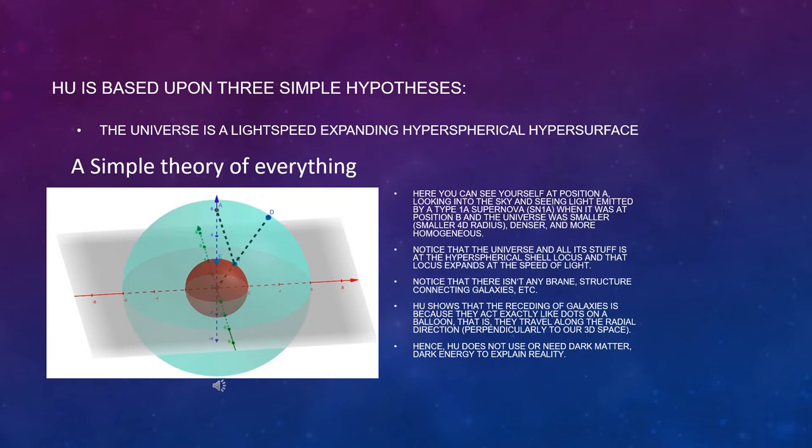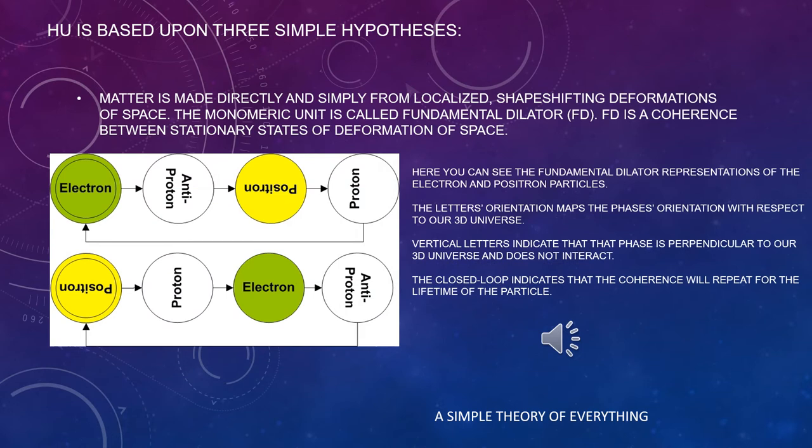HU shows that the receding of galaxies is because they act exactly like dots on a balloon. That is, they travel along the radial direction, perpendicularly to our 3D space. Hence, HU does not use or need dark matter, dark energy to explain reality.